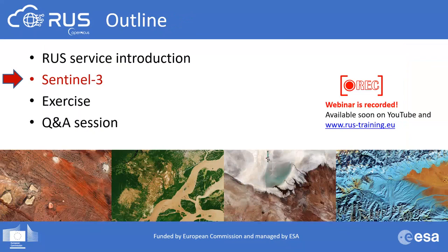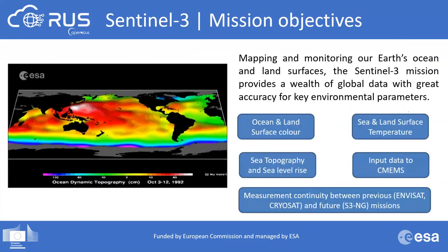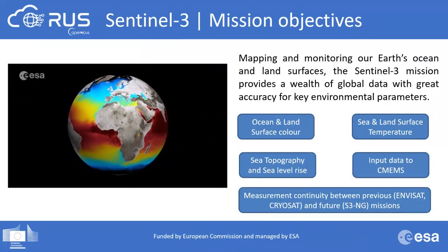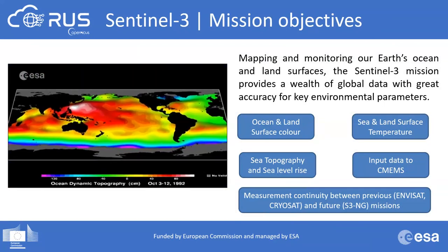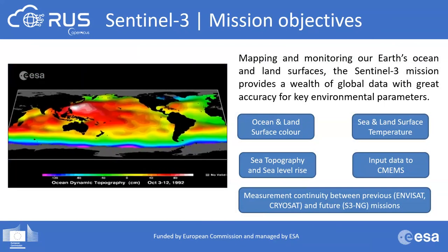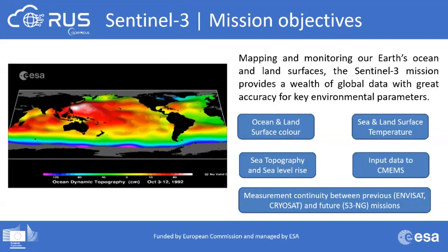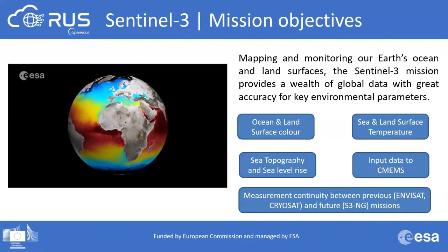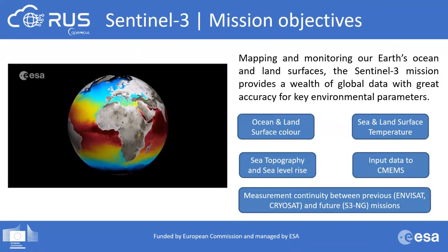The Sentinel-3 mission is dedicated to mapping and monitoring Earth's ocean and land surfaces. The satellites provide a wealth of global data with great accuracy for key environmental parameters including ocean and land surface color, sea and land surface temperature, sea topography, and sea level rise. Data from this mission are used as input to the Copernicus Marine Environment Monitoring Service, and the mission ensures measurement continuity between previous and future Earth observation missions.